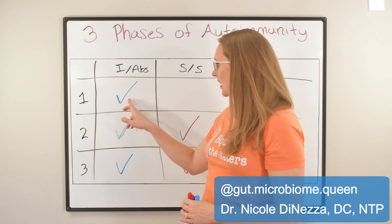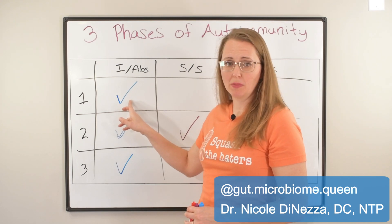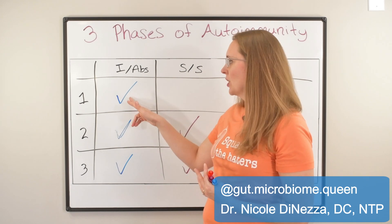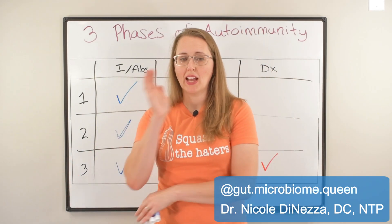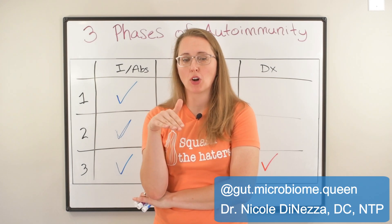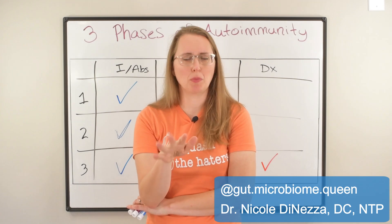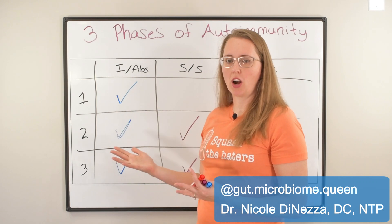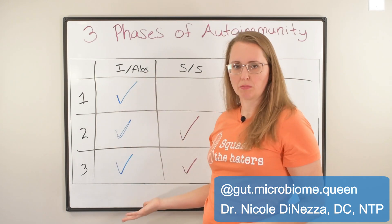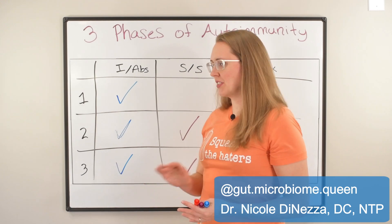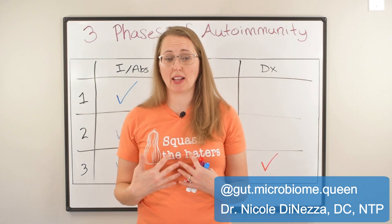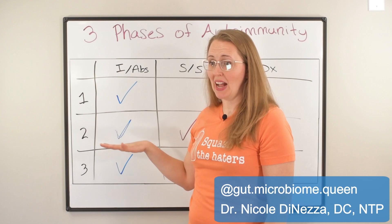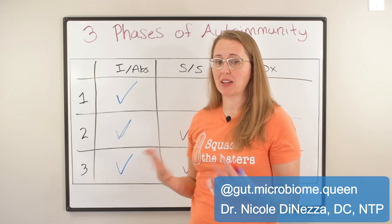But are we going to look at someone in phase one and tell them they don't have a problem? I'm not. If you don't address the root cause — and I have a video about the root causes of autoimmunity which I'll try to link below — this thing is going to progress. And this is where I'll share my own story. I know from firsthand personal experience that it is entirely possible to catch something at phase one or phase two and either drastically slow the progression or halt it entirely.